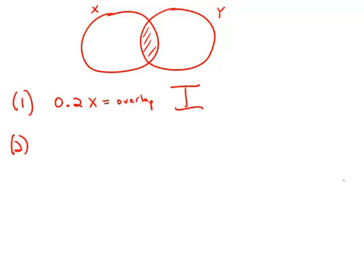Now forget statement number one. Focus purely on statement number two. Of the members of Club Y, 30% are also members of Club X. So 30%, 0.3 times Y, this also equals the overlap.